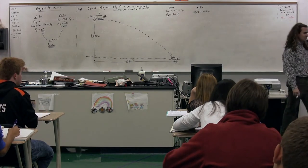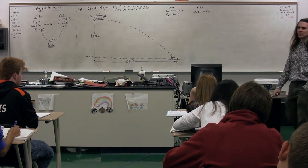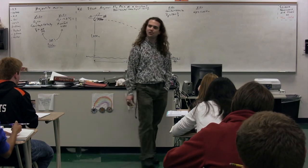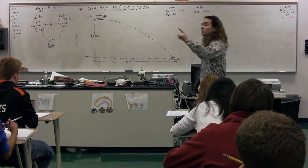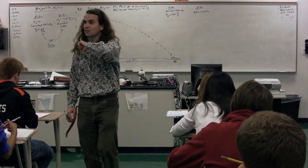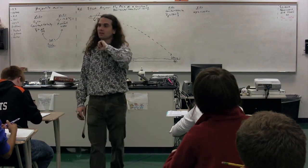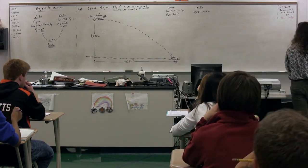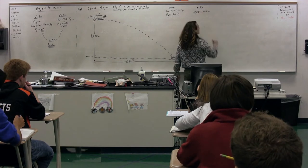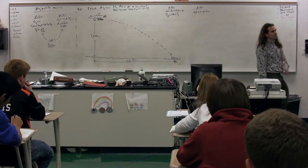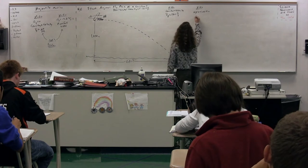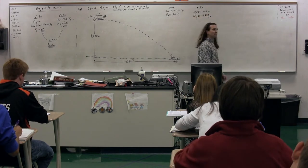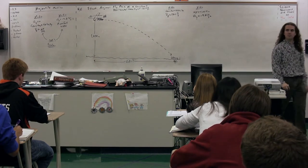Why is the displacement negative in the y-direction? Because displacement is a vector and has both magnitude and direction. So that displacement, because it's going down, is going to be negative one kilometer. The acceleration in the y-direction is not zero — we know Arjun is an object in free fall, therefore the acceleration in the y-direction equals negative 9.8 meters per second squared.